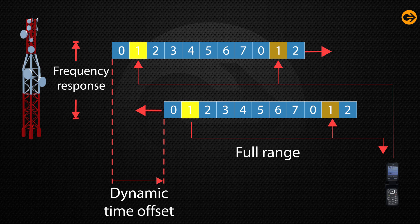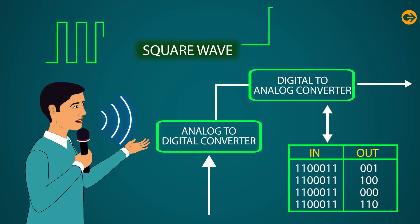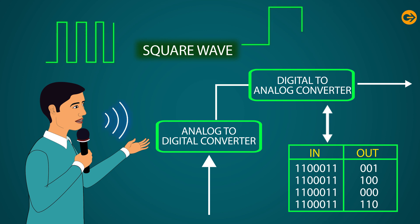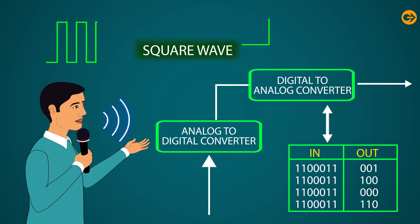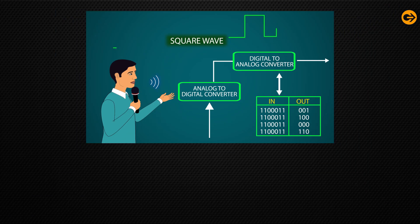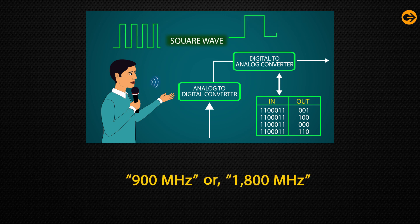The system uses a variation of Time-Division Multiple Access, also known as TDMA. Talking about its theory, it mainly digitizes and compresses data, then transmits it down a channel with two other streams of user data, each in its own time slot. It works either at 900 MHz or 1800 MHz frequency band.